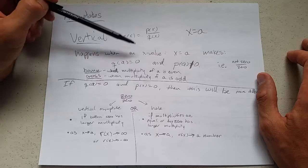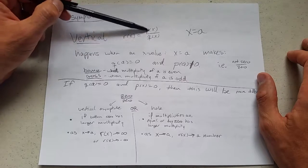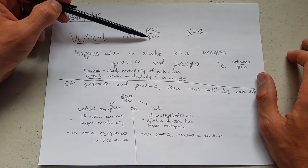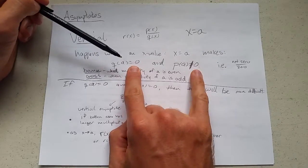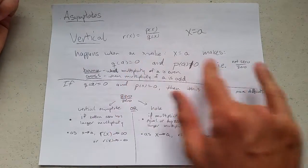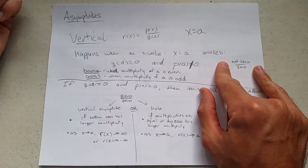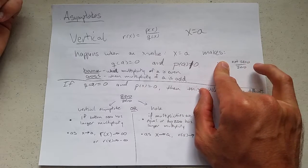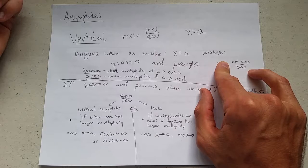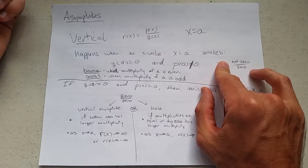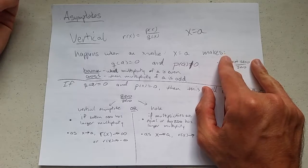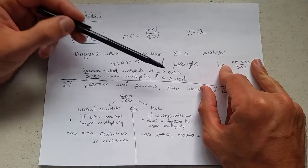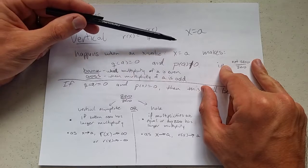Now something weird can happen if you get 0 over 0. So vertical asymptotes definitely happen when denominator is 0 and the numerator is not 0. An easy way to think about it, you get not 0 divided by 0. So dividing by 0 is bad. Funky things happen when you have 0 over 0. We'll look at that. But this is the easier case. You get not 0 divided by 0. That's bad. And that would be a vertical asymptote.